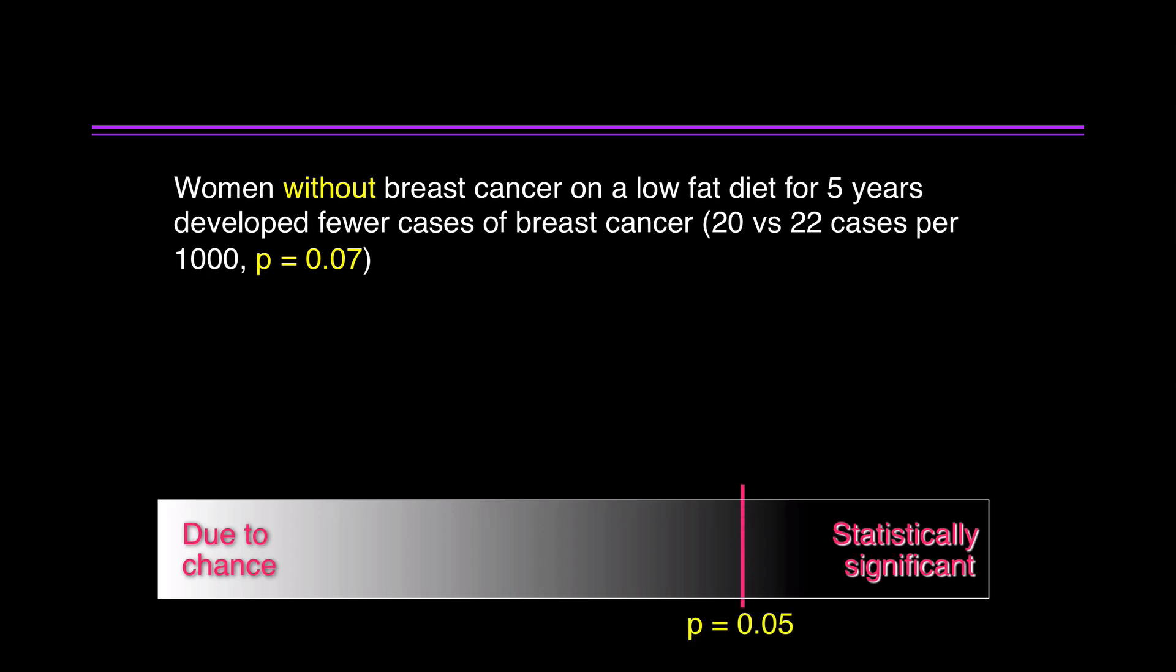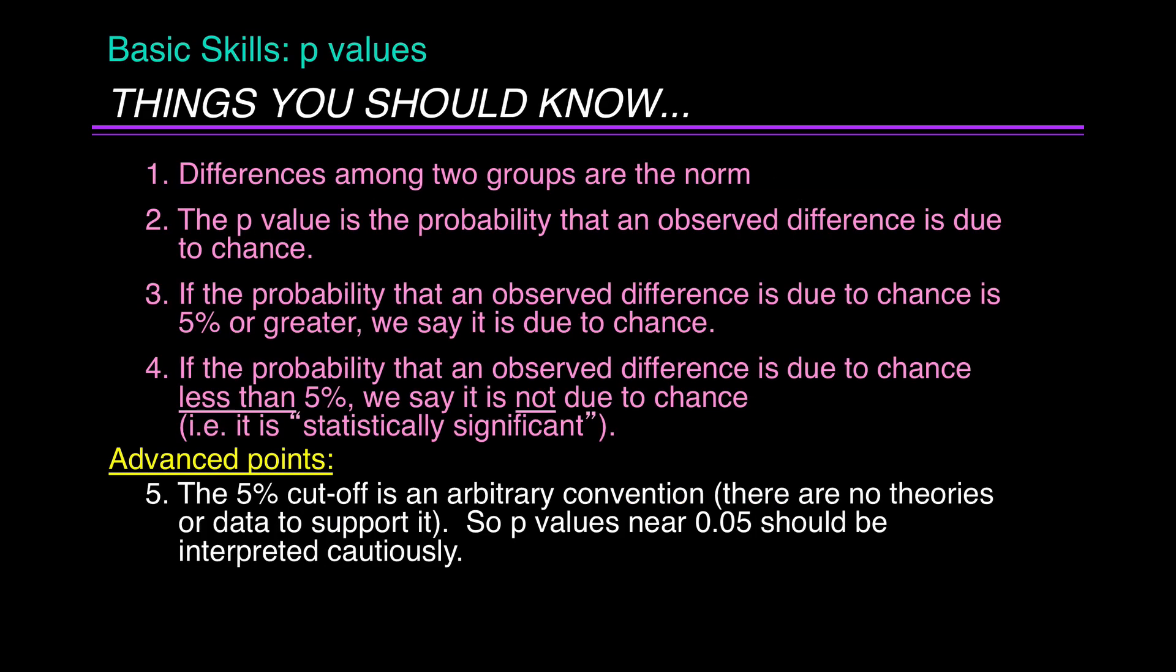We have an arbitrary rule. The cutoff is p equals 0.05. But you should know there's a gray zone. 0.07? 0.03? They're pretty close. And that leads us to our advanced point. The 5% cutoff is an arbitrary convention. There are no theories or data to support it. So p-values near 0.05 should be interpreted cautiously.